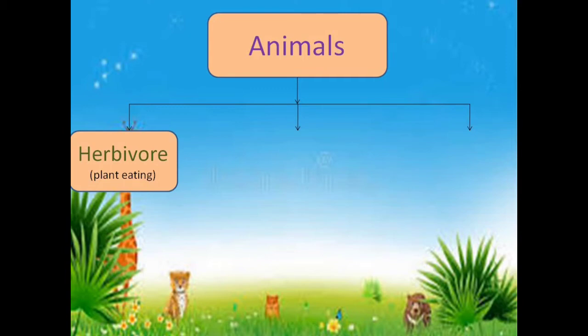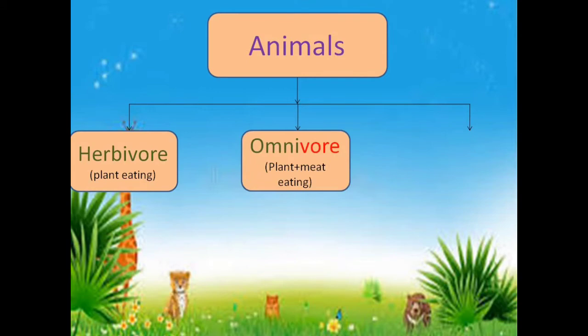Let's see another one. Now we have Omnivore. Omnivore — that means plant plus meat eating. M-E-A-T. Meat — everybody knows that is non-veg.